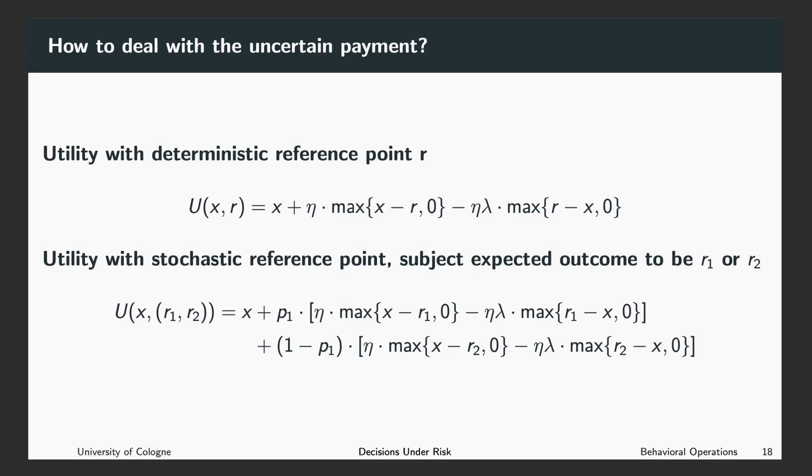So when we introduced loss aversion we were thinking about deterministic reference points. When you have a deterministic reference point r and receive a payment of x, your utility is given by x, and...